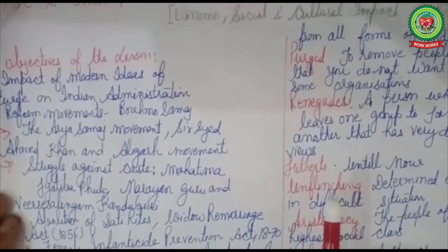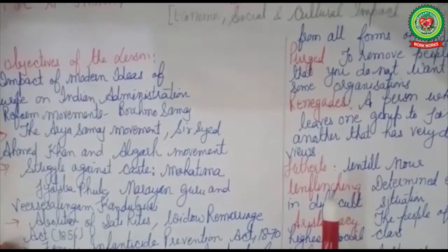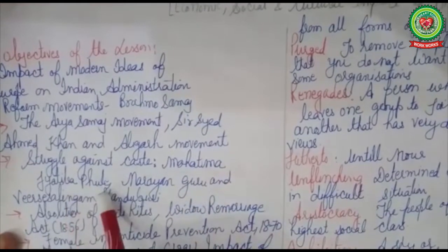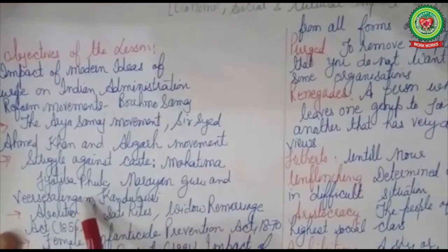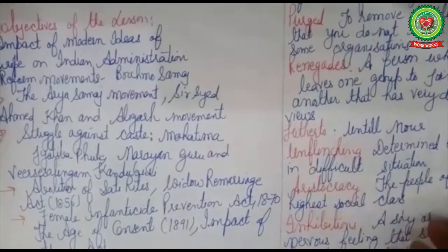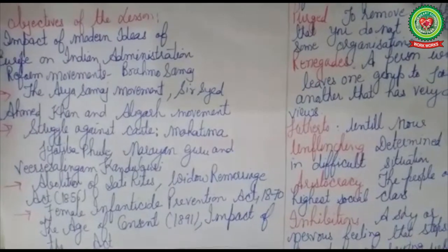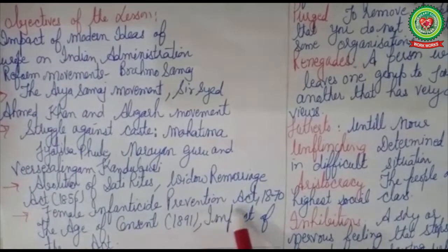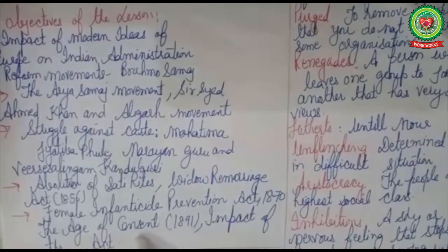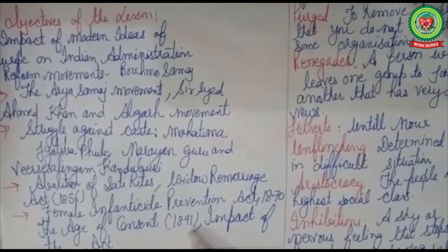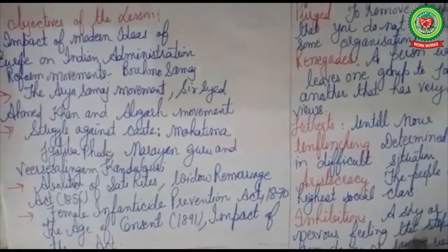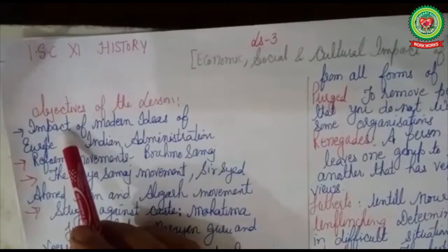The objectives also include: the Aligarh movement; struggles against caste, covering the contributions of Mahatma Jyotiba Phule, Narayana Guru, and Veeresalingam Kandukuri; then abolition of sati, the Widow Remarriage Act of 1856, the Female Infanticide Prevention Act 1870, and the Age of Consent Bill 1891 with its impact.